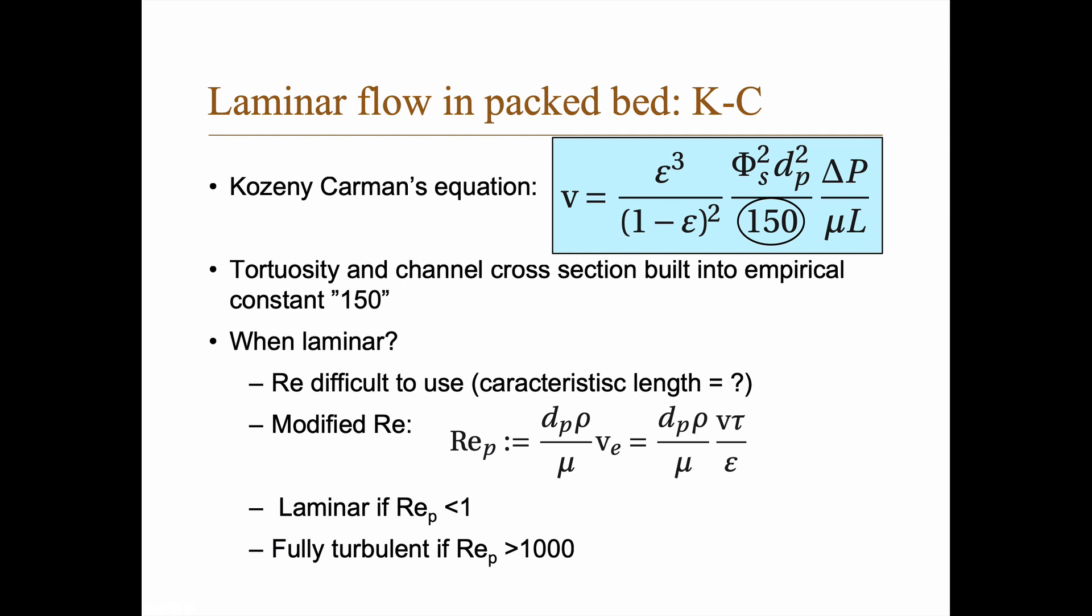When you have laminar flow in a packed bed, the Kozeny-Carman equation is often very useful. And it looks like this. The apparent velocity is the porosity cubed divided by one minus porosity, and that thing squared. You have the sphericity squared, the diameter of the particle squared, and then you have divided by 150, you come back to that, and then the delta P divided by mu L, which you recognize from Darcy's law.